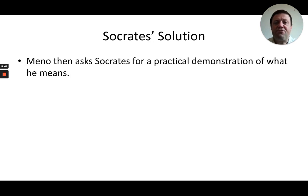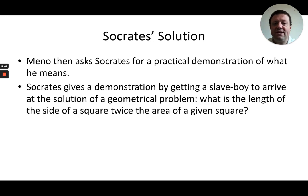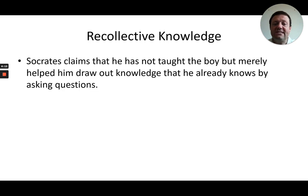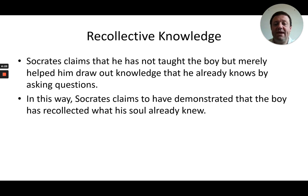Meno then asks Socrates for a practical demonstration of what he means by recollective knowledge, and Socrates gives this demonstration by getting a slave boy to arrive at the solution of a geometrical problem: what is the length of the side of a square twice the area of a given square? Socrates does not actually tell the boy anything about geometry, but rather asks him a series of questions, and the boy then works out the answer by himself. Socrates claims he has not taught the boy anything, but merely helped him draw out knowledge he already had by asking questions, demonstrating that the boy has recollected what his soul already knew.